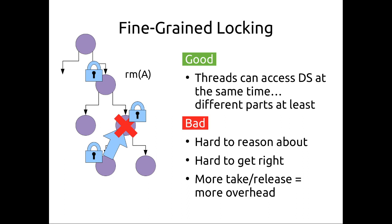Fine-grained locking is good because multiple threads can access a data structure at the same time — other threads could take the left branch without any problem. We can get parallelism within the data structure. However, it is really hard to write correctly — somewhere between coarse-grained locking and lock-free algorithms. Additionally, locks are not free: the take and release calls have overhead, and now we're calling them more times, causing more overhead.